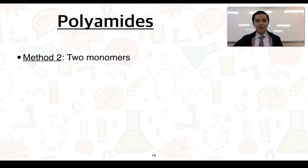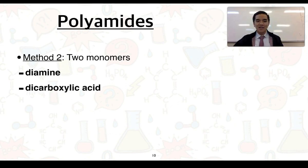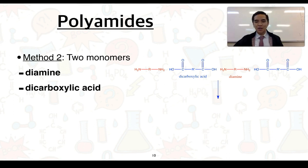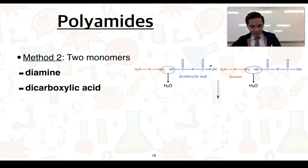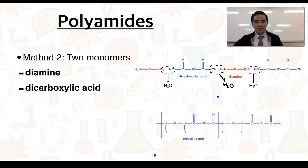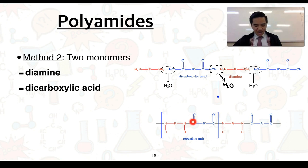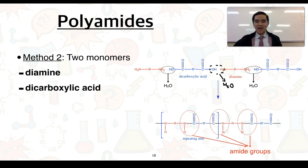Method two uses two monomers: one consisting of amino functional groups and the other with carboxyl functional groups — namely a diamine and a dicarboxylic acid. The same condensation reactions occur between these functional groups, eliminating water in the middle as well, to form our polyamide. The repeating unit is shown in square brackets. The giveaway that this polyamide is formed from two monomers is that the amide functional groups have opposite or alternating alignments — pointing left, right, left, right, and so on.